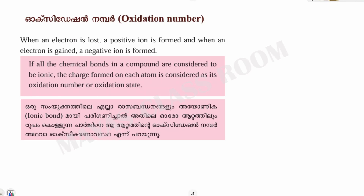We are going to talk about oxidation. The oxidation number — because the loss of electrons is involved, the oxidation of electrons is being driven by the gain of electrons.